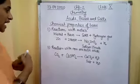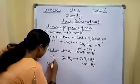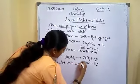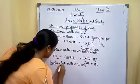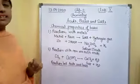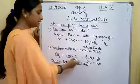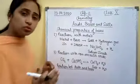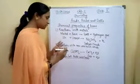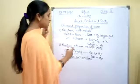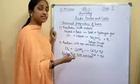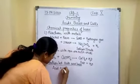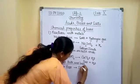Now we come to the reaction between acids and bases. This is a neutralization reaction, because the acidity is neutralized by the base or the basicity is neutralized by the acid, forming salt and water. It is called a neutralization reaction because it neutralizes the effect of the acid, or vice versa, neutralizes the effect of the base. The general formula is: acid + base → salt + water.